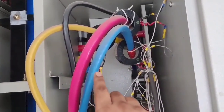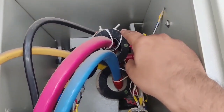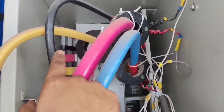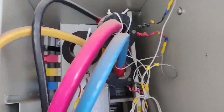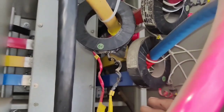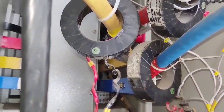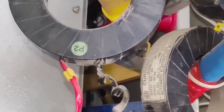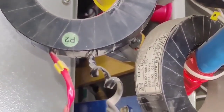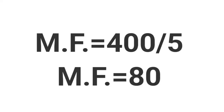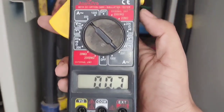You can see we have R, Y, B — 3 phases — and also we have 3 current transformers: one CT for R phase, one for B phase, and one for Y phase. For checking a CT, first you need to identify the ratio of the CT. You can see we are using a 400/5 current transformer. So first, find the multiplying factor: 400 ÷ 5 = 80. The multiplying factor is 80 for this CT.